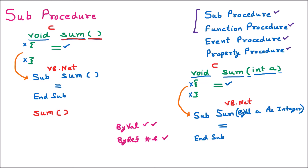Now we are going to call the procedure. Calling of the procedure is the same as in C programming. We write the name of the procedure, which is sum, then the bracket starts. These brackets are not empty — some integer variable is passed. Either we can pass an integer value directly or a variable containing an integer value. So this is the calling of the procedure.